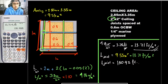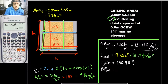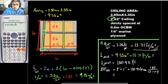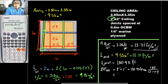Now we get the total board feet needed for the ceiling works. For the total board feet: we are using 2×2 lumber, so it is 2 inches × 2 inches × 130.93 feet, times the conversion factor of 1 board foot per 12 inch-inch-feet. So: 2 × 2 × 130.93 ÷ 12 = 43.64 board feet.